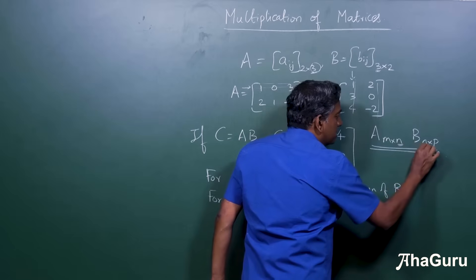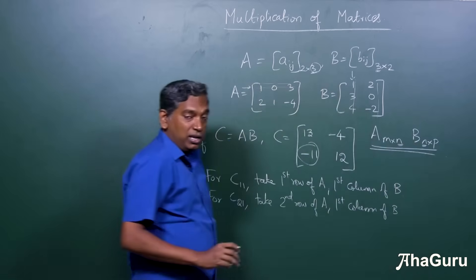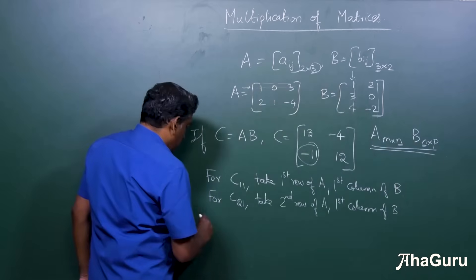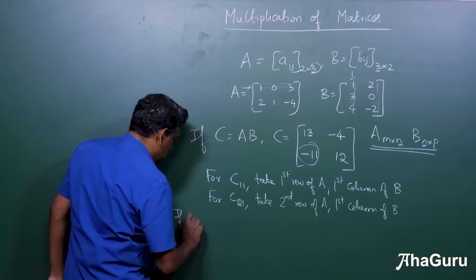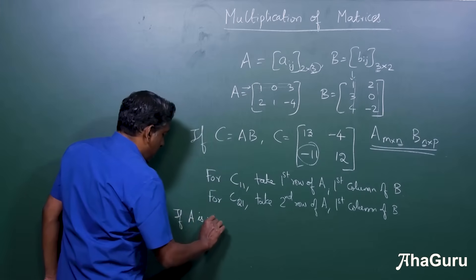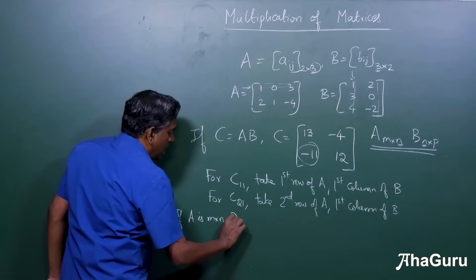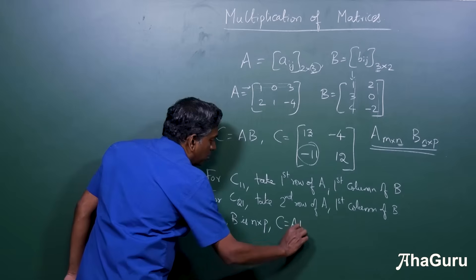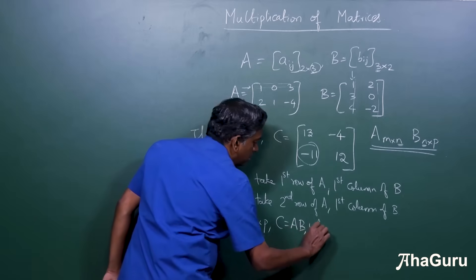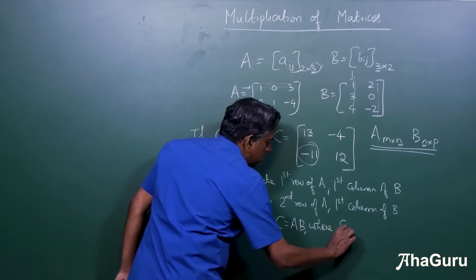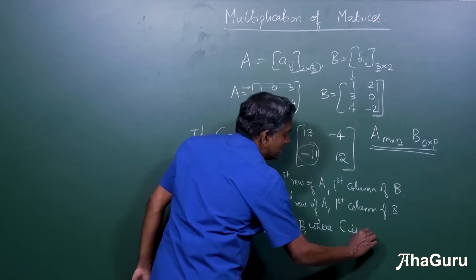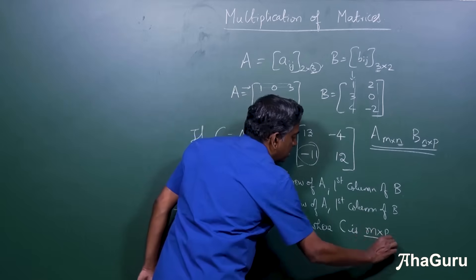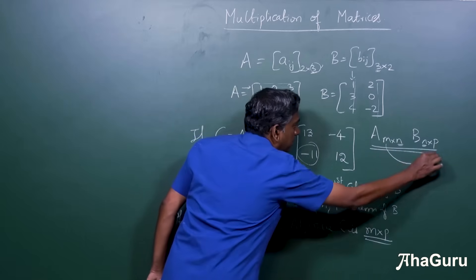Please note that this N and this N must be equal. So if A is M by N and B is N by P, then C is equal to AB, where C is M by P, this M by P.